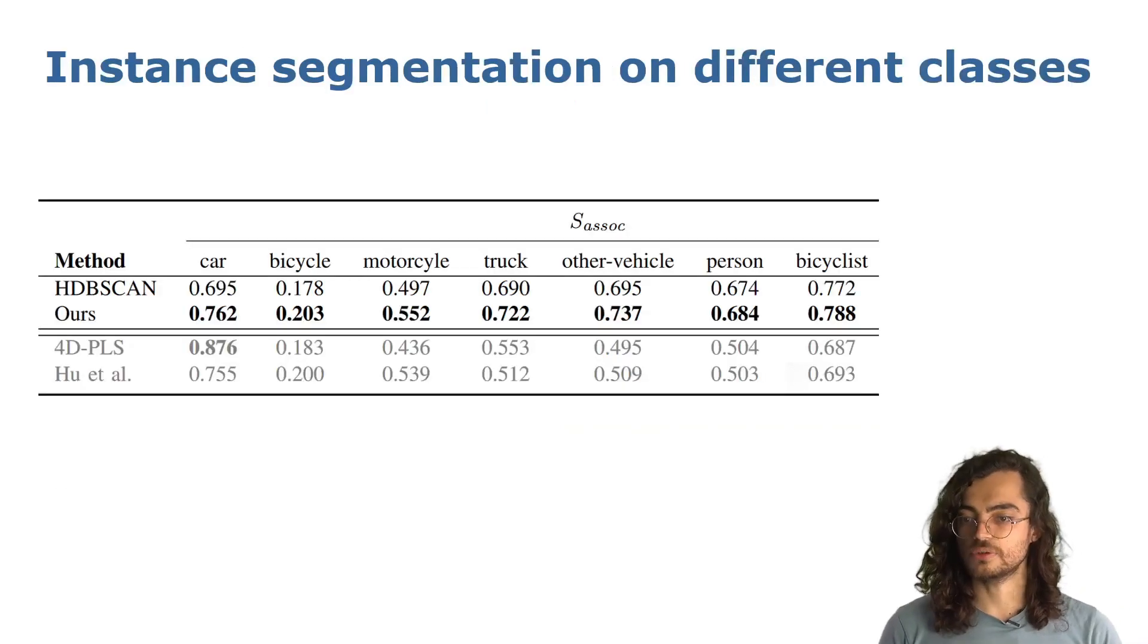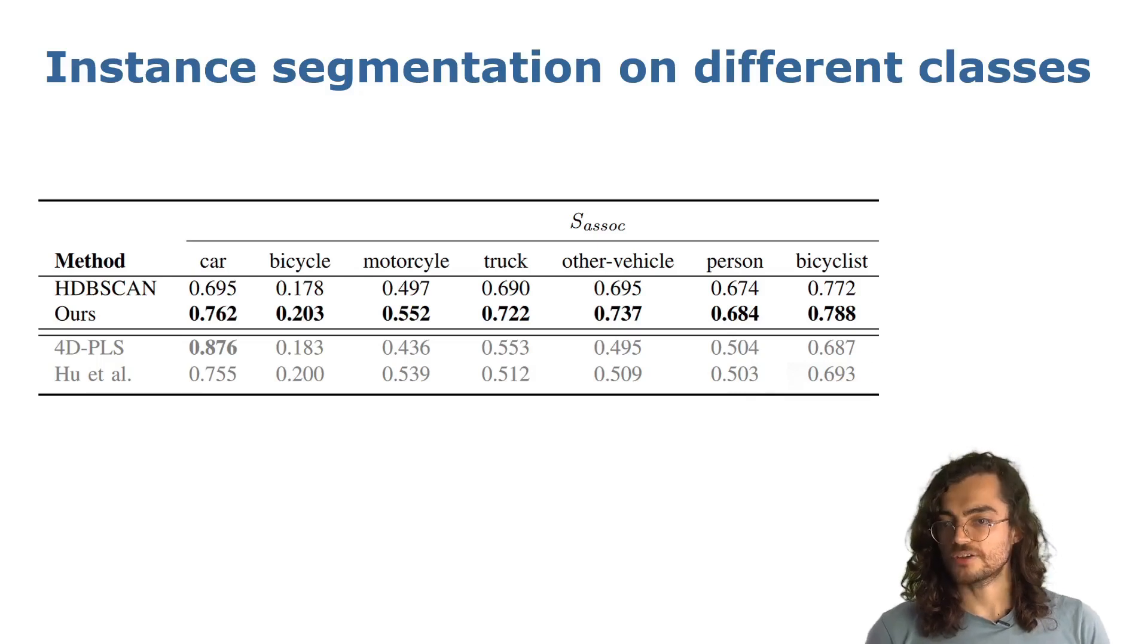When evaluating individual known classes, supervised methods have a better performance on the car class, which is the class with the most examples in the semantic-kitti dataset. However, for the other underrepresented classes, such as cyclist and other vehicle, our method surpasses both geometric and supervised learning-based methods, showing the dependence of labeled examples for learning-based methods and the advantage of our unsupervised method.